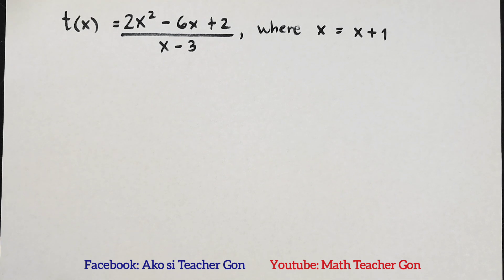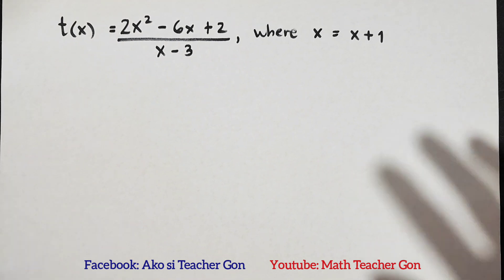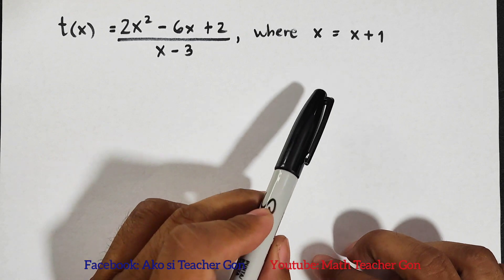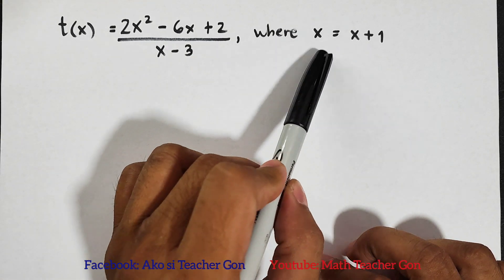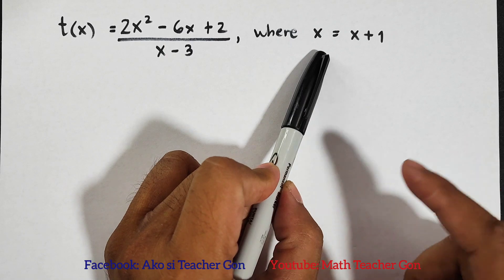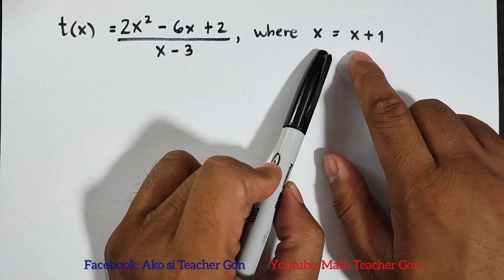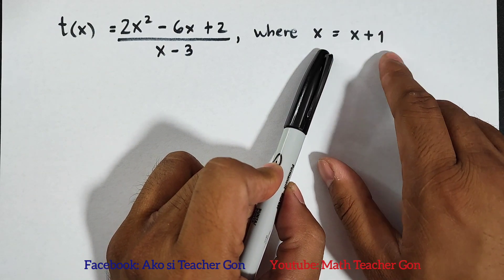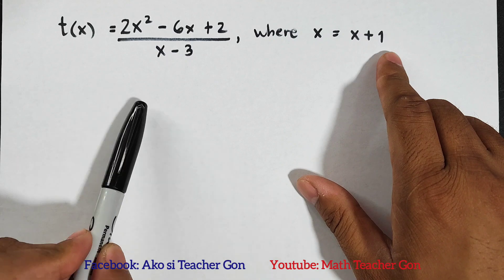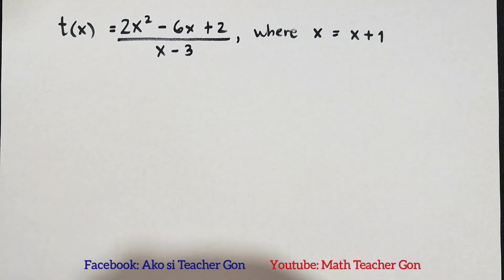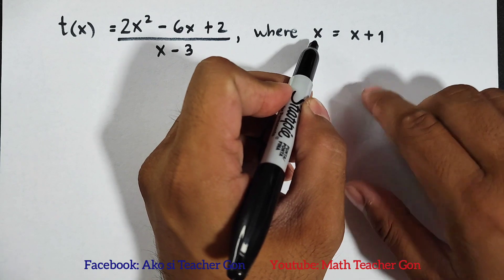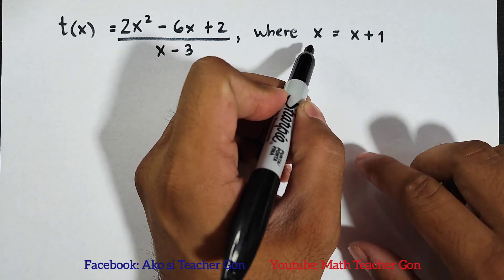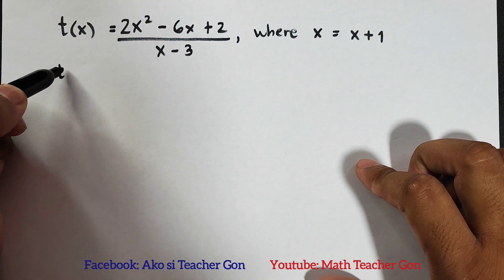Basically, this one is under evaluating functions, but the difference from our previous videos and this video is that we will evaluate this function t and the value of x, or our input, is an expression: x plus one. So how are we going to evaluate this? It's as simple as this - we will just substitute the value of x, or x will be replaced by x plus one.